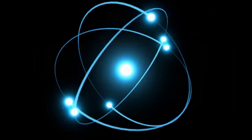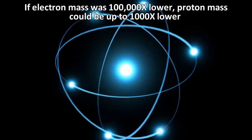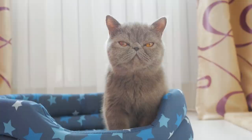He also found some other interesting information. For example, he found that if the mass of the electron was a hundred thousand times lower, the proton mass could be as much as a thousand times lower to achieve the same stellar lifetime. There are lots of combinations where you could vary two or more constants and still have viable universes. There's more than one way to skin a cat and there's more than one way to build a universe.